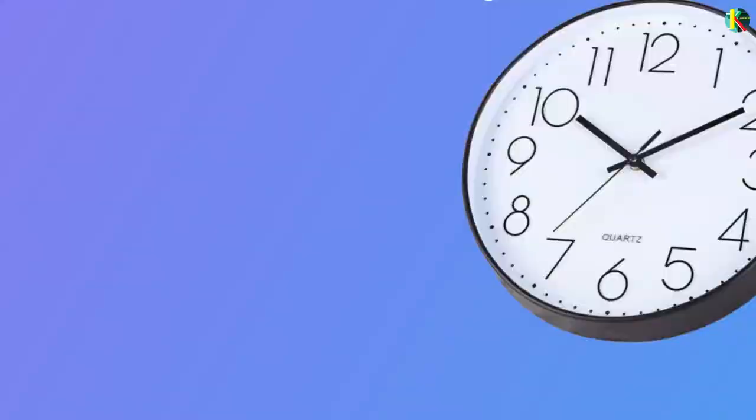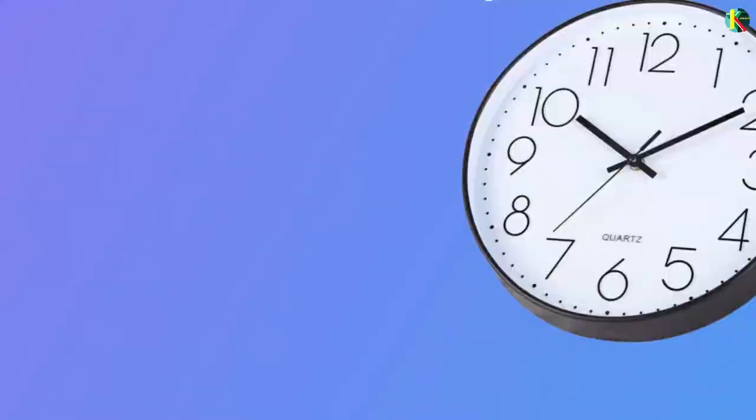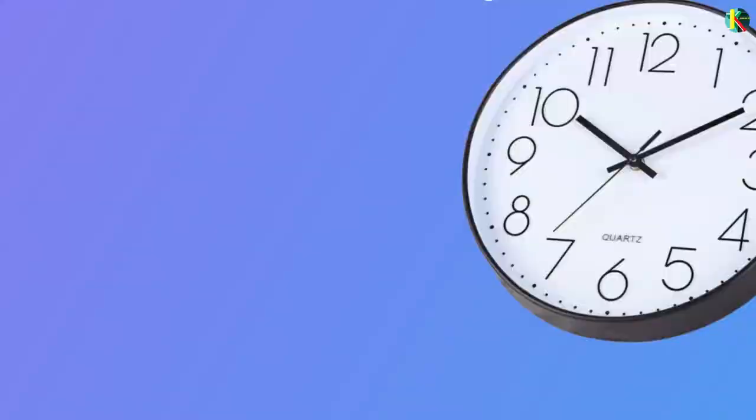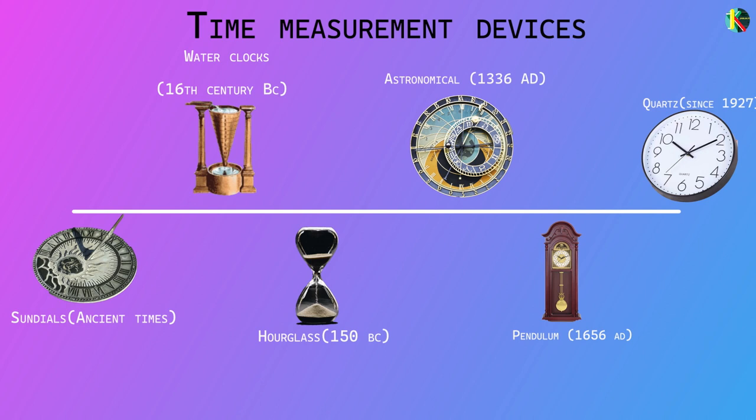From sundials to modern clocks, humanity has come a long way in measuring time. But the accuracy of such measurements is not reliable for places where even a minute change in measurement can cause huge errors.